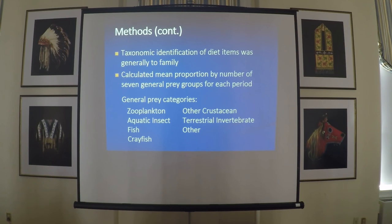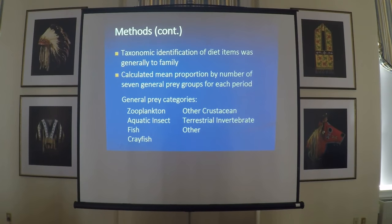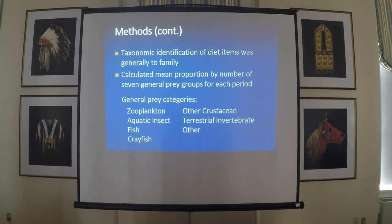For each diet, we identified every diet item to the taxonomic level of family, with the exception of things like copepods and ostracods and some terrestrial invertebrates. We then calculated the proportion by number of seven general prey groups for each predator for each of the three periods. Those categories were zooplankton, aquatic insects, fish, crayfish, other crustaceans (amphipods and isopods), terrestrial invertebrates, and other — anything not in those categories, including leeches, water mites, and non-fish vertebrates.